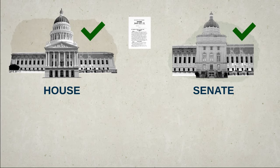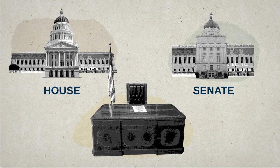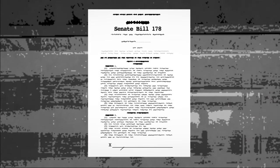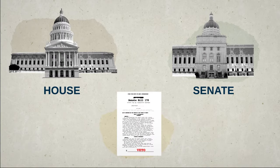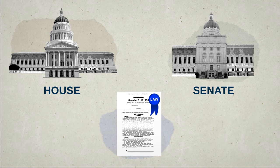After the bill passes both the House and Senate, it goes to the governor's desk. If the governor supports the bill, they sign it, turning it into a law. If the governor doesn't sign it, the legislature can still override the veto by a two-thirds majority. And the bill can become a law that way, too.